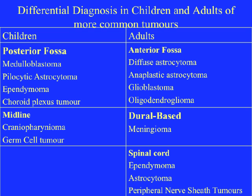In the midline in children, we would consider craniopharyngiomas and germ cell tumours higher on the differential diagnosis. Comparing this with adults, in whom the majority of tumours are in the anterior fossa, we see diffuse astrocytomas, anaplastic astrocytomas and glioblastomas, as well as oligodendroglial tumours. Dural-based tumours in adults are overwhelmingly meningiomas, and in the spinal cord the common tumours are ependymomas, astrocytomas, and peripheral nerve sheath tumours.